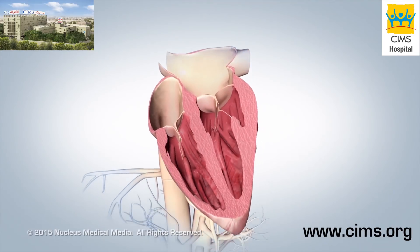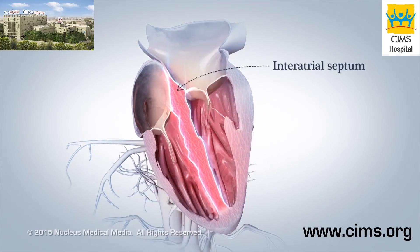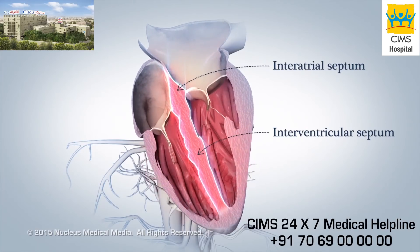Walls inside your heart, called the interatrial and interventricular septa, help keep the blood on the left and right sides from mixing.